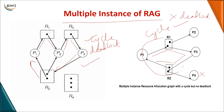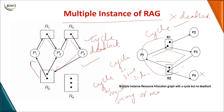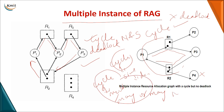In summary: if you have a cycle and it is a single-instance graph, it compulsorily leads to a deadlock. If you have a cycle in a multiple-instance graph, it may or may not lead to a deadlock. Therefore, in single instance, the presence of a cycle is both a necessary and sufficient condition for deadlock, whereas in multiple instance it is only a necessary condition, not a sufficient condition.